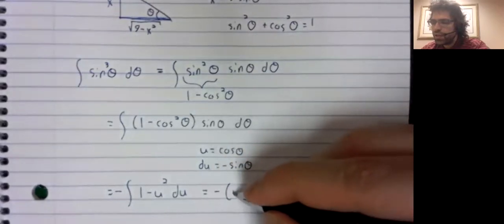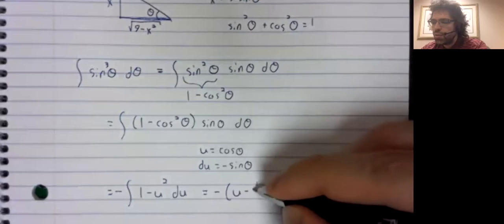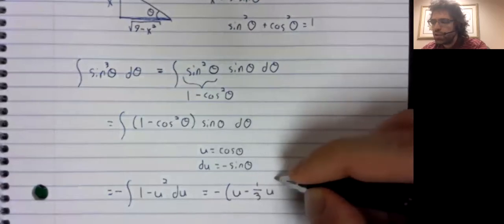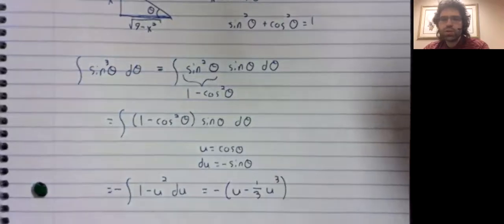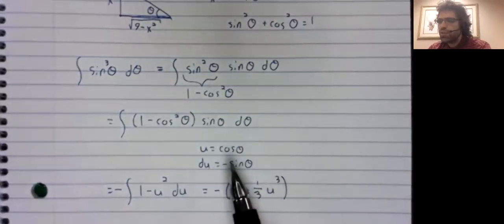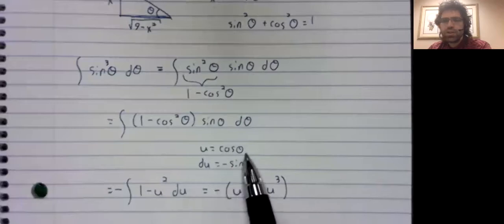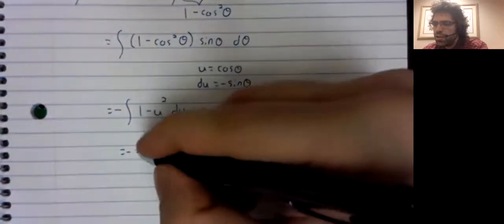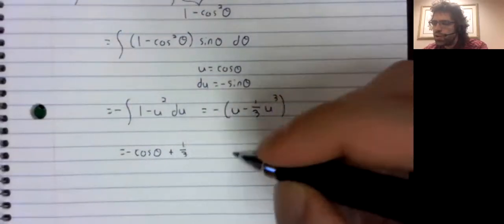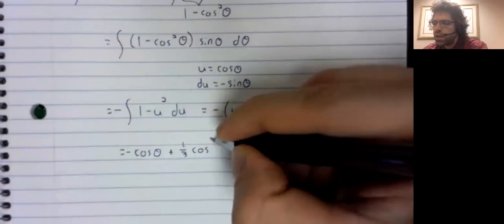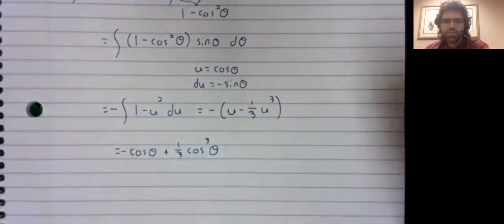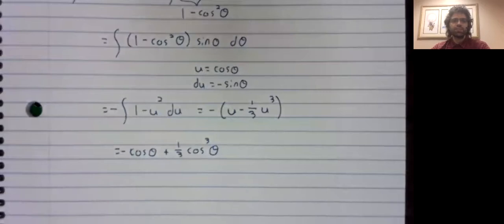Or the negative u minus one third u cubed. Now what's u? U is the cosine of theta. Plus one third the cosine cubed of theta.